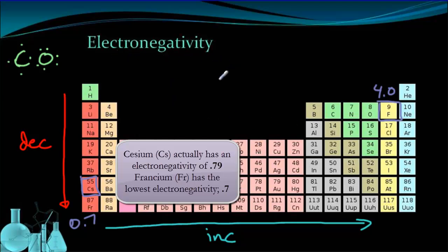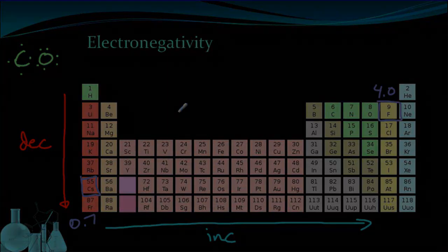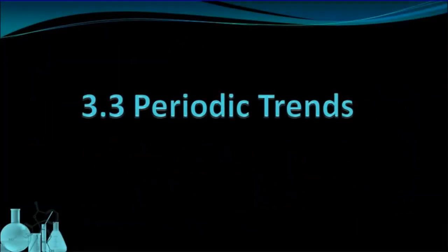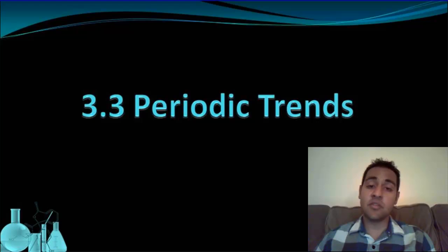We're going to talk about electronegativity a lot more when we talk about bonding. That wraps up our review of what some of the trends are that we can observe on the periodic table. I'm now going to go through each one and talk about why those trends are the way they are in a way that will let you sort of reason through why these trends exist and why some things increase and why some things decrease.